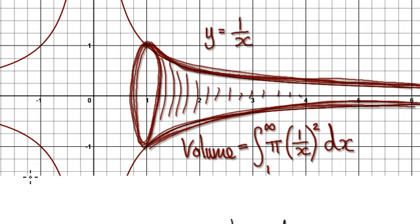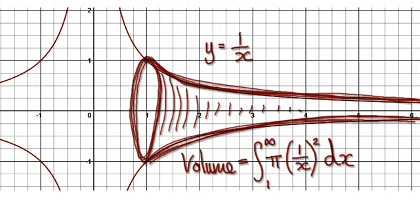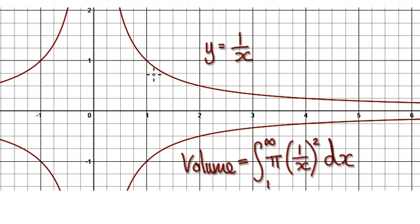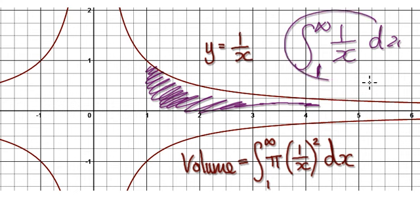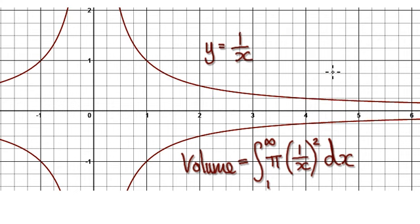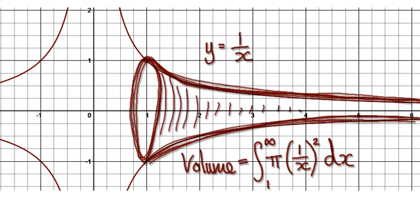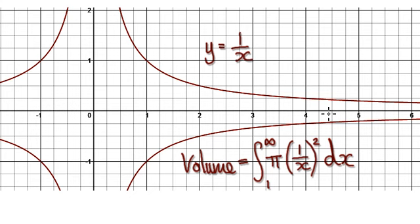To do this — we've seen in the past that if you try and work out the area of the flat area, not the 3D solid, if you work out the area from 1 to infinity of 1 over x dx, we've seen that this diverges — it doesn't converge to one particular point. But for some reason, when you work out the volume, it converges.